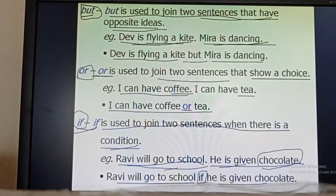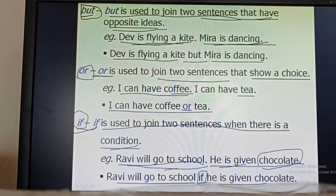So today we have learnt four conjunctions: and, but, or, and if. Write this in your copy and learn this. Thank you so much. Have a good day.